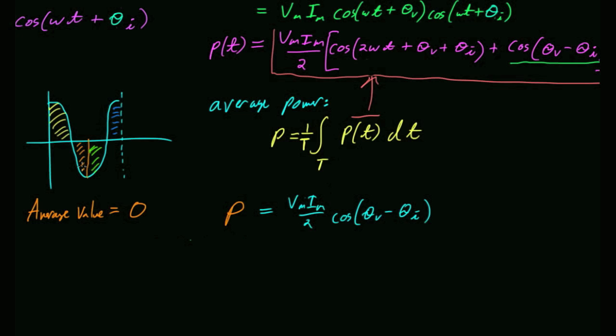So this is my final average power formula: P_avg = Vm·Im/2 · cosine(θV − θI).